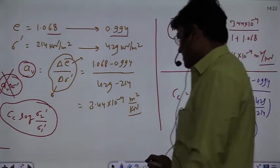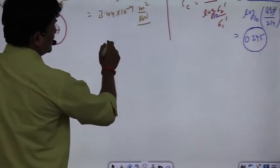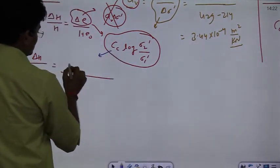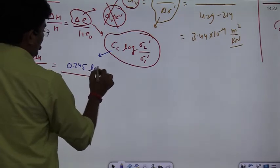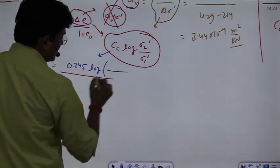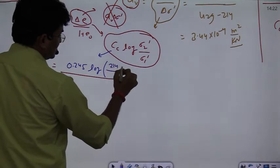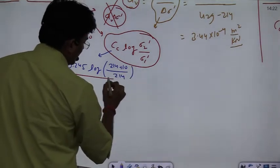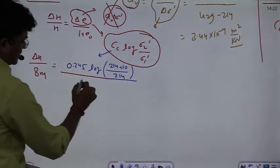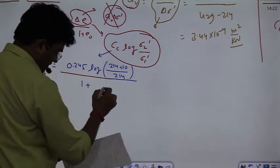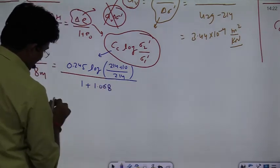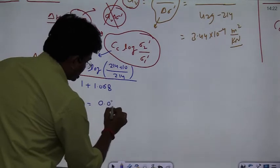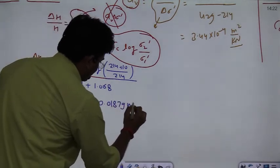I didn't ask the question, but indirectly you have to remove CC from here. This is 0.245 multiplied by log of, the pressure is changing 214 plus 10 divided by 214, and this will be whole divided by 1 plus E naught. In starting void ratio is 1.068. So it will solve here. Delta H is coming out to be 0.01879 meter.